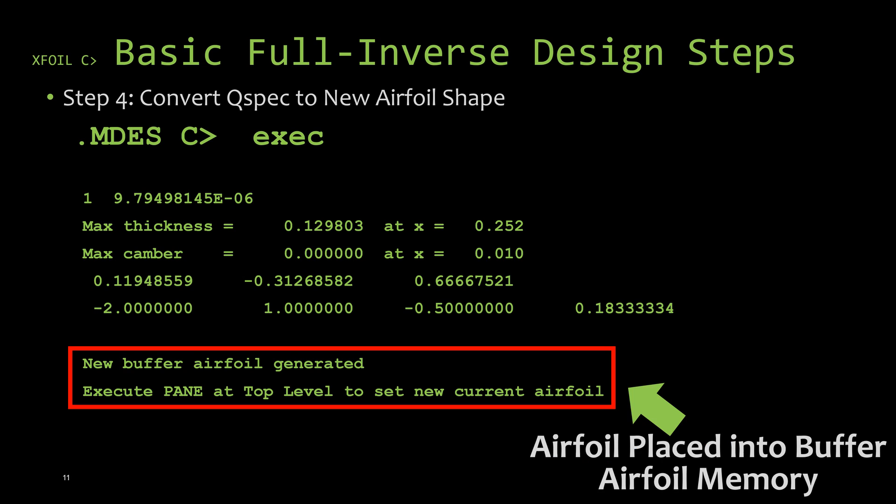So now we have the velocity distribution we want our new airfoil shape to have. The next step is to convert this velocity distribution into an airfoil shape using the EXEC command in the MDES menu.